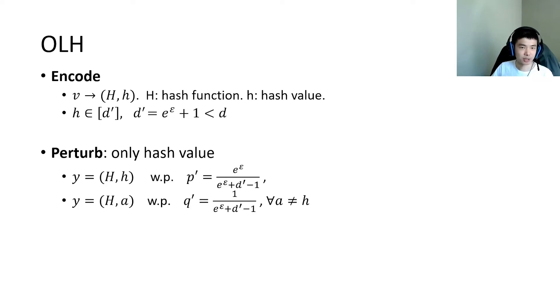OLH uses hash functions. Specifically, it encodes an item to a hash function and hash value pair. The hash function is randomly selected from a family of hash functions, and it maps the item to a hash value in the domain smaller than the item domain. In the perturb step, OLH perturbs only the hash value in the encoded pair.